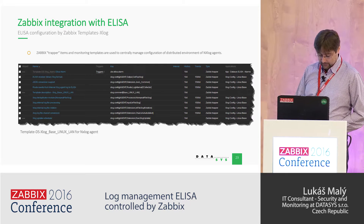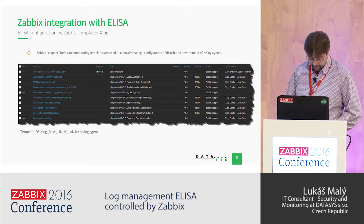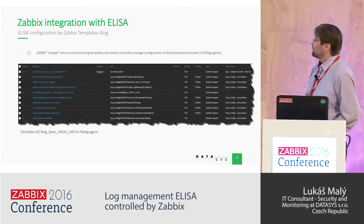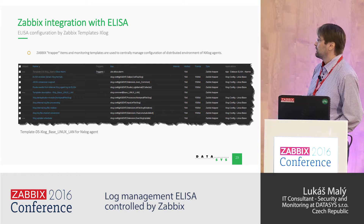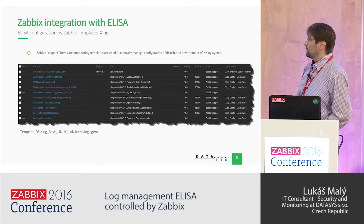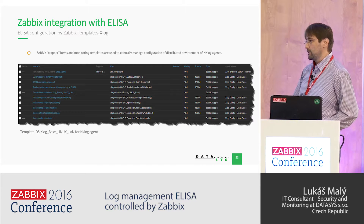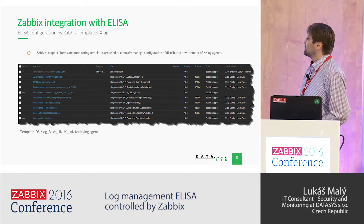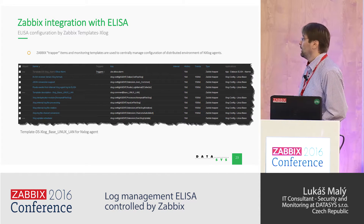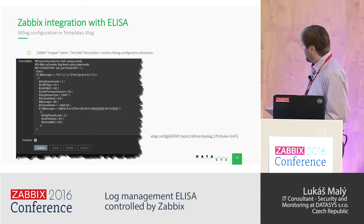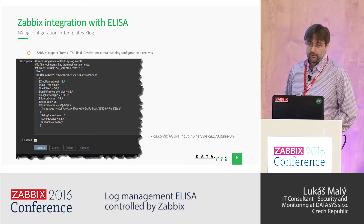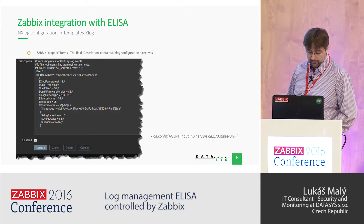The big wrapper index and monitoring templates are used to centrally manage the configuration of a distributed environment of NXLog agents. On this screen is the base template for NXLog. This template is needed for basic communication between the ELISA server and an NXLog agent. These templates and keys together create the configuration file for NXLog. NXLog configuration directives are entered in the item's description field. We don't modify the database schema — we employ the description field, which is not commonly used.